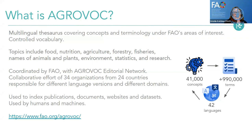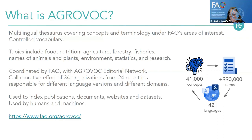We have over 41,000 concepts and approximately 995,000 terms — these are labels for each concept — in up to 42 different languages. It is a huge but structured and accessible collection. AgriVoc is useful because it is used to index publications, documents, websites, and data sets. Importantly, AgriVoc is used by both humans and machines, which is key to making information accessible. The link to our website is fao.org/agrivoc.